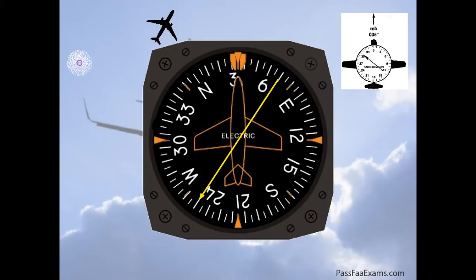because the question said bearing from, intercepting outbound. And outbound means we will fly the tail of the needle. Now if we calculate the angle between our heading and the tail of the needle, it's exactly 35 degrees.